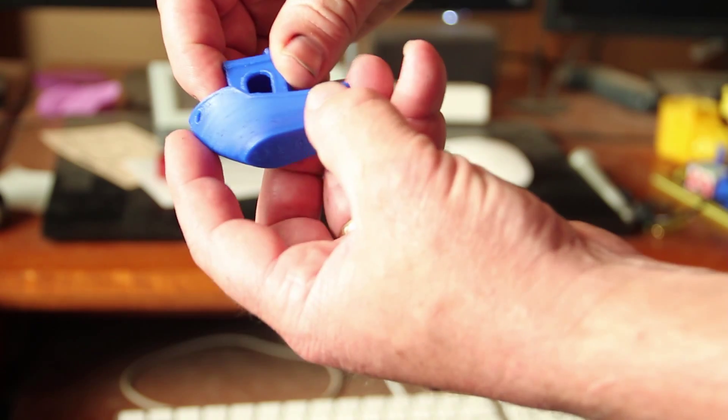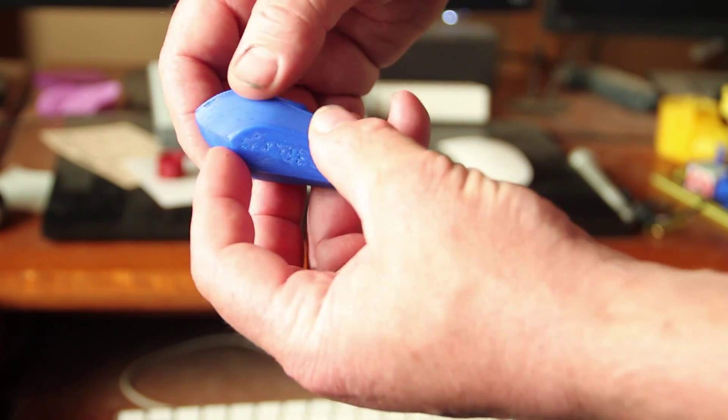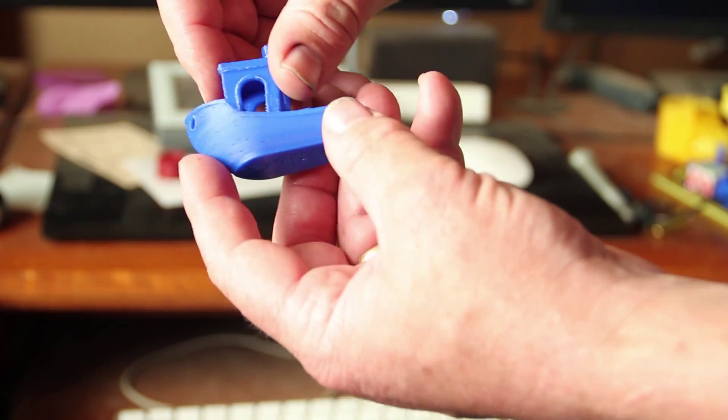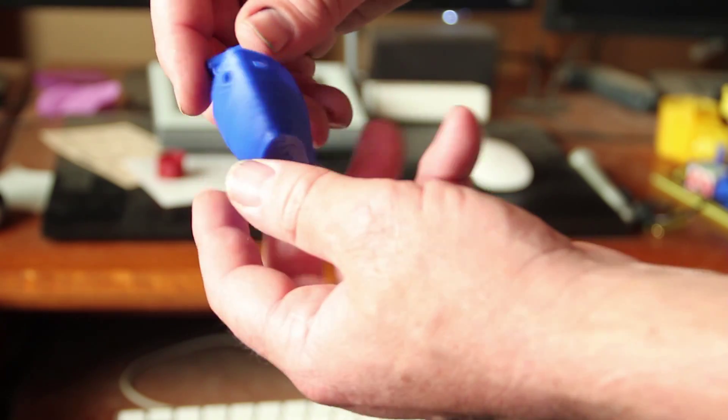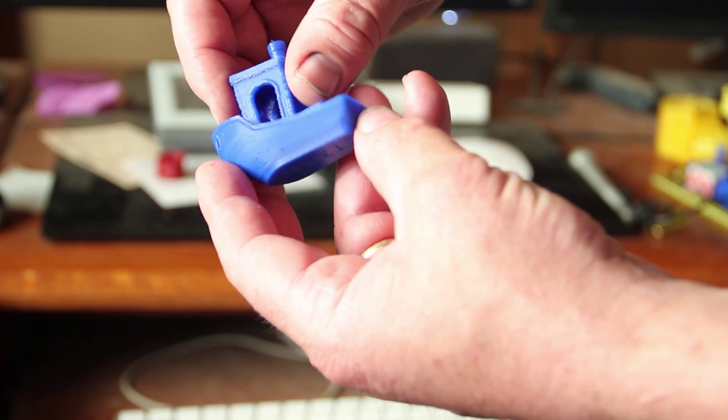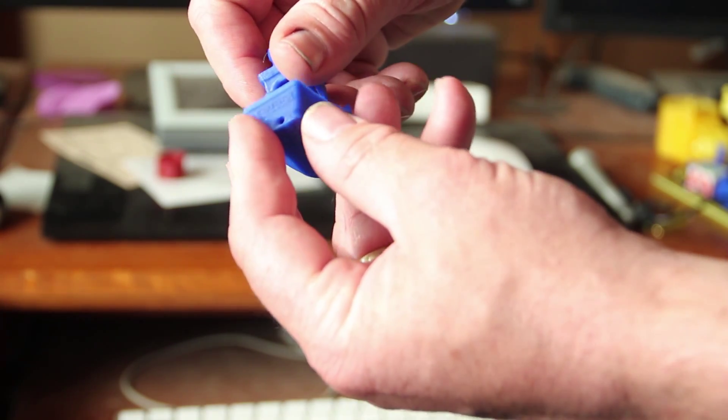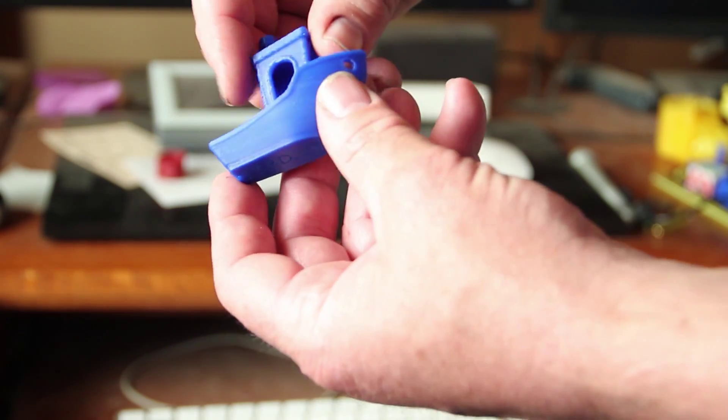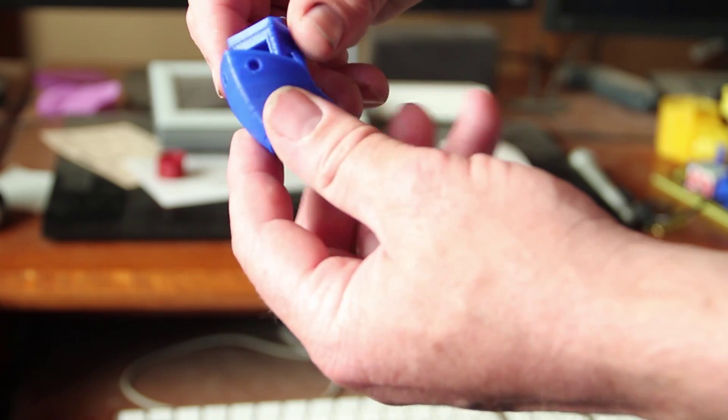So I think the Bowden's a success. It's probably not nearly as clean as the direct drive. And of course the direct drive is good for the Ninja Flex. I haven't even tried the Ninja Flex through the Bowden. Probably not worth trying.